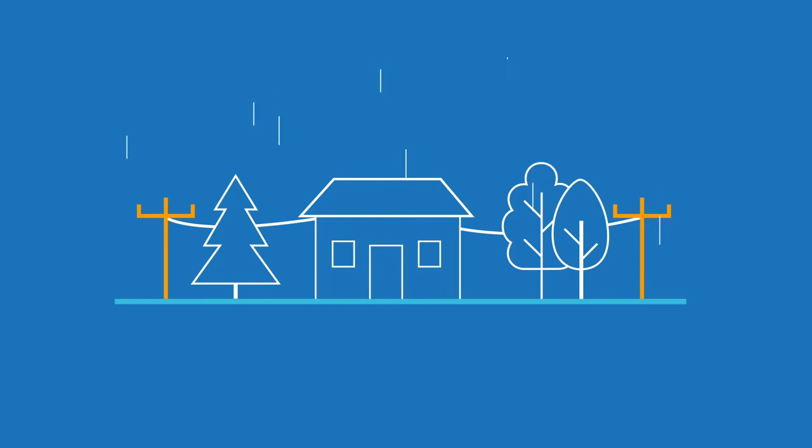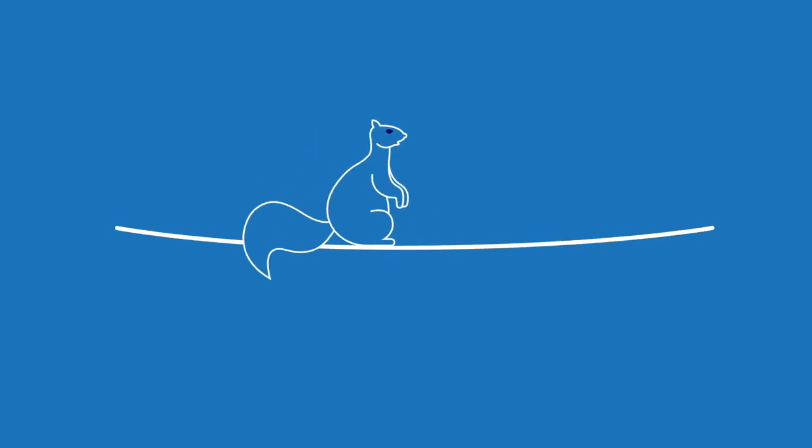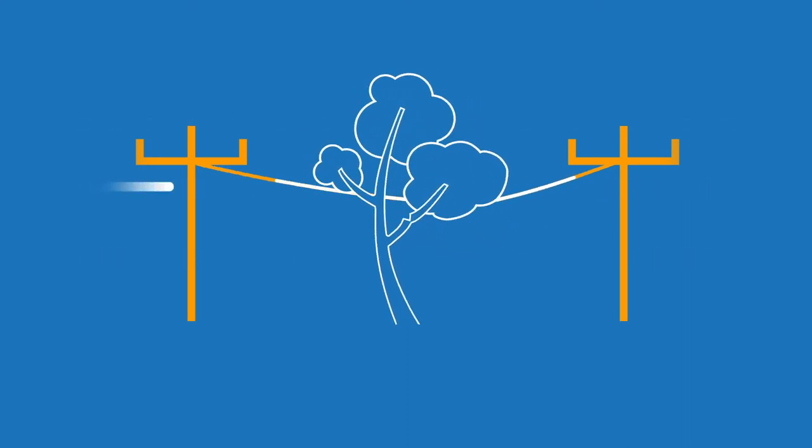These can happen for any number of reasons: freezing rain, wet snow, wind gusts, or even an animal getting up to mischief. Bad weather can weaken tree branches until they snap and fall onto wires, causing power outages.